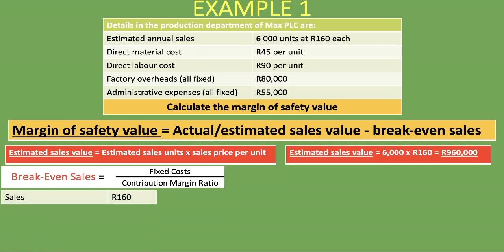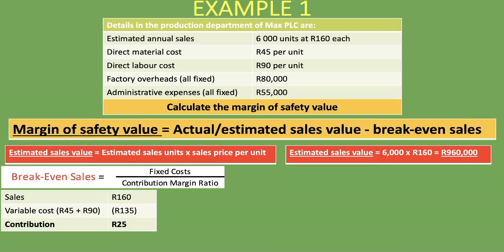Our variable cost is 45 rand plus 90 rand, which gives us 135 rand for direct material and direct labor costs. Now we take sales of 160 rand minus 135 rand for variable cost, and it gives us a contribution of 25 rand.